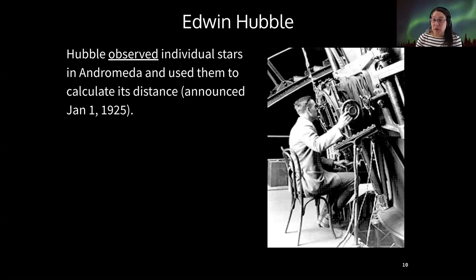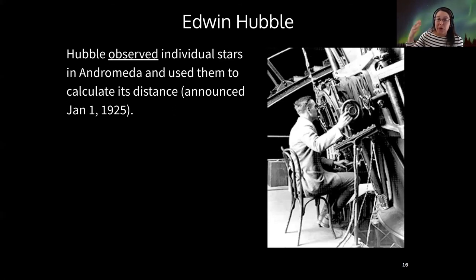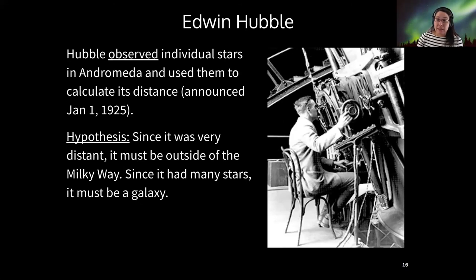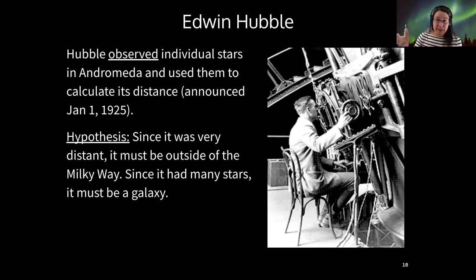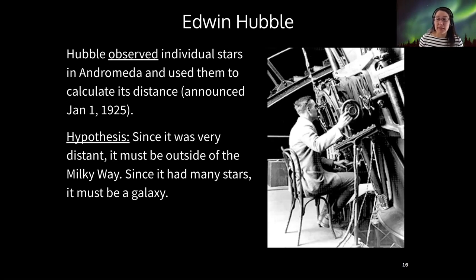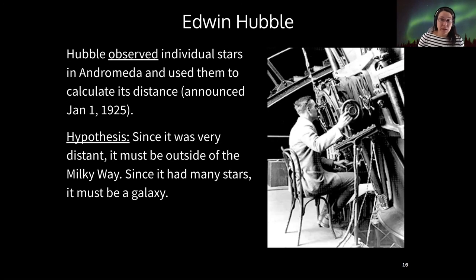This distance placed Andromeda outside of our Milky Way, whose extent was already known. Once Hubble knew Andromeda was very distant, his hypothesis was that it must be outside the Milky Way, and since he could resolve individual stars within it, he concluded it was another galaxy. After this, Hubble went on to catalog many different types of galaxies, calculate their distances, and measure the speeds at which they traveled. In this class, we'll learn how to do all of those things, essentially following some of Hubble's pathway.